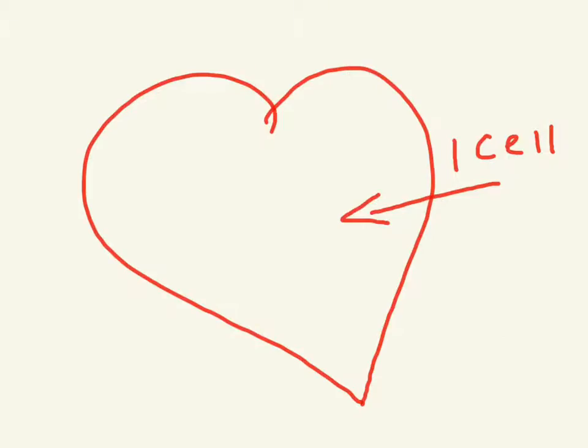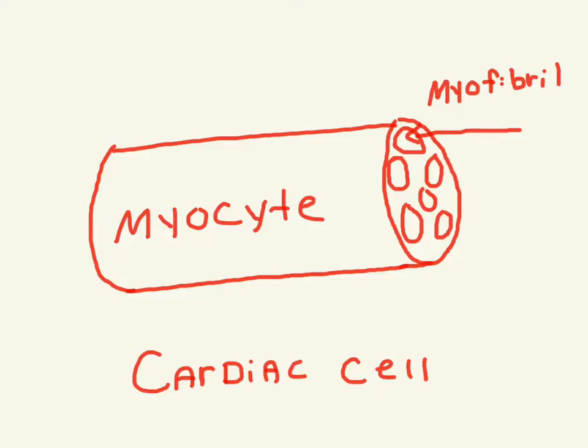So we're going to start off, we're going to take one cell out of the heart. I got my nice little heart that I drew here and we're going to dial in and take one little cell right here. We have our one heart cell and the heart cells are called myocytes. And inside the myocyte we have a bunch of little myofibrils that we can see in here. And each one of these myofibrils, we're going to zoom in and look at the different components.